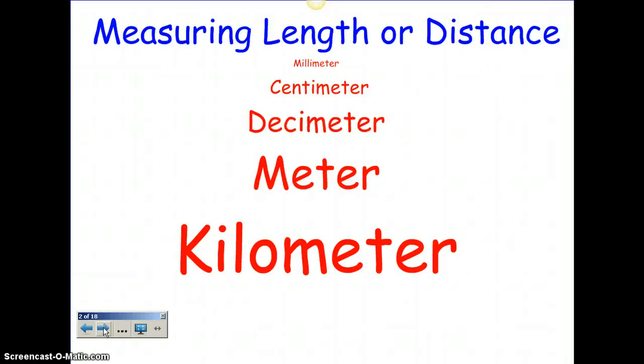First we have a millimeter, and a millimeter is really small — as you can see at the top, it's really tiny. Then we have a centimeter, which is a little bit bigger, a decimeter, a meter, and a kilometer.